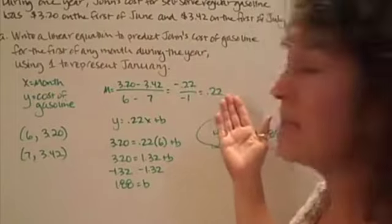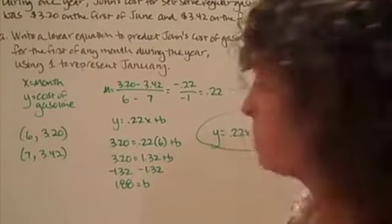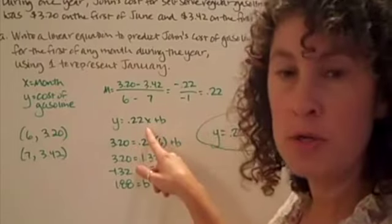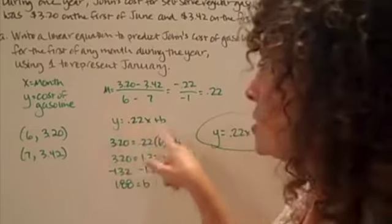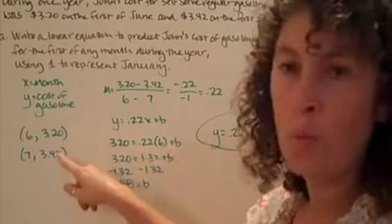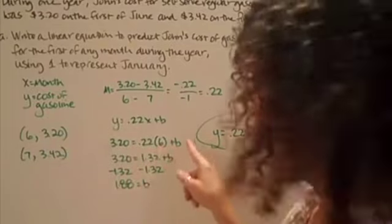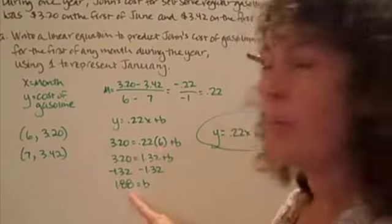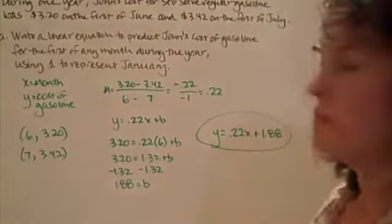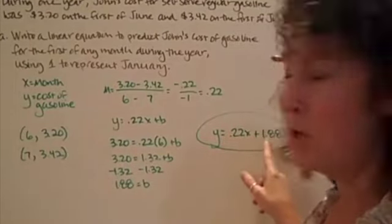So the price of gasoline is changing at a positive rate. It's increasing at 22 cents per month. Let's take that rate of change, that slope, and plug it into my slope-intercept form. To find the y-intercept, I'm going to take one of these ordered pairs and plug it in for y and x. I come up with my y-intercept is 1 and 88 hundredths. My equation is y equals .22x plus 1.88.